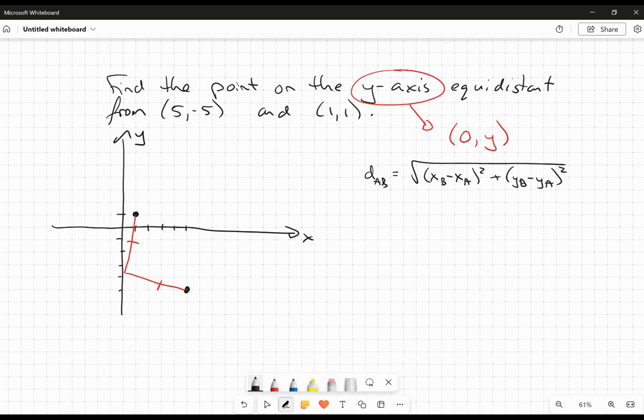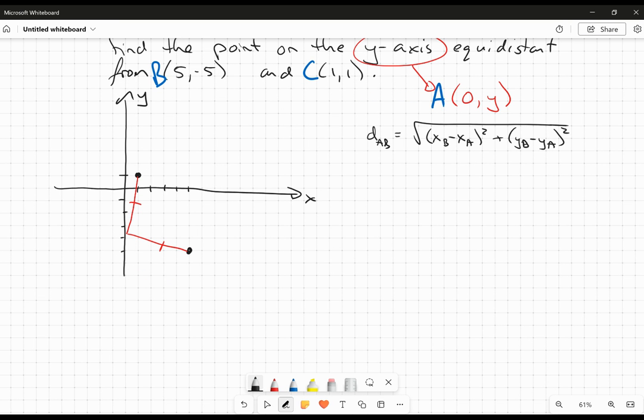Now, in this particular case here, what we want to do is we want to set the distances kind of equal to each other. So, we've got this point on the y-axis. Let's call this the point A. And then this is point B, and this will be point C. What I want here is I want the distance from A to B to be equal to the distance from A to C.